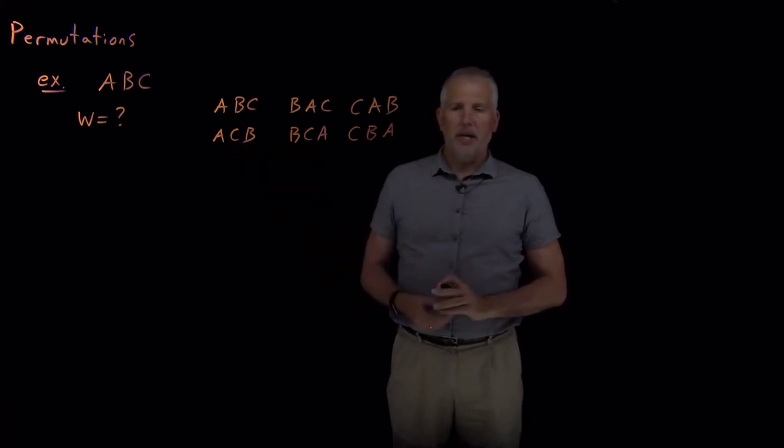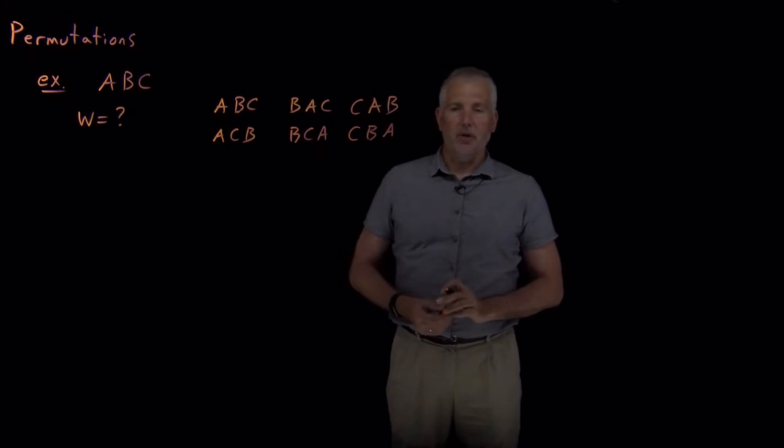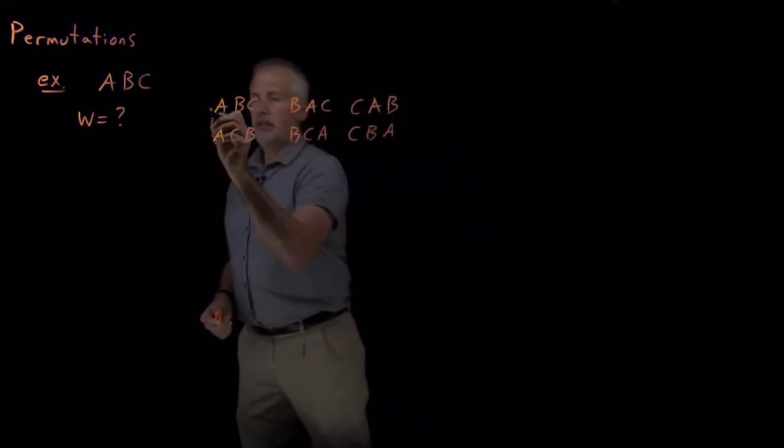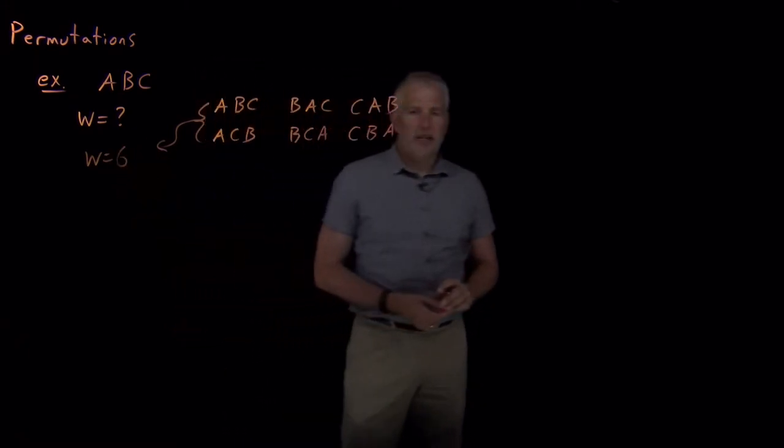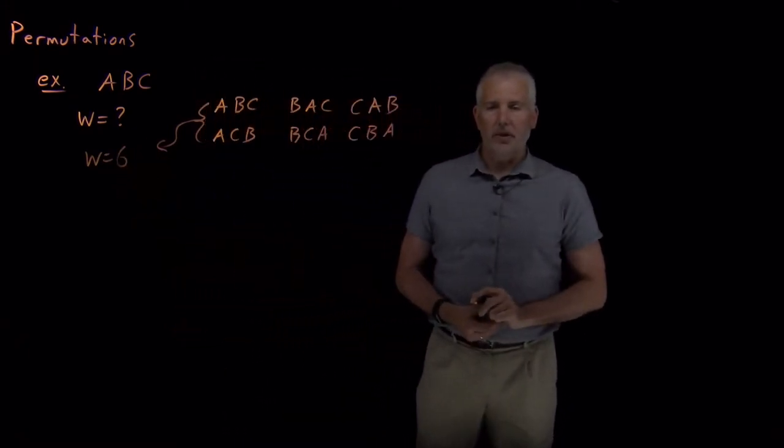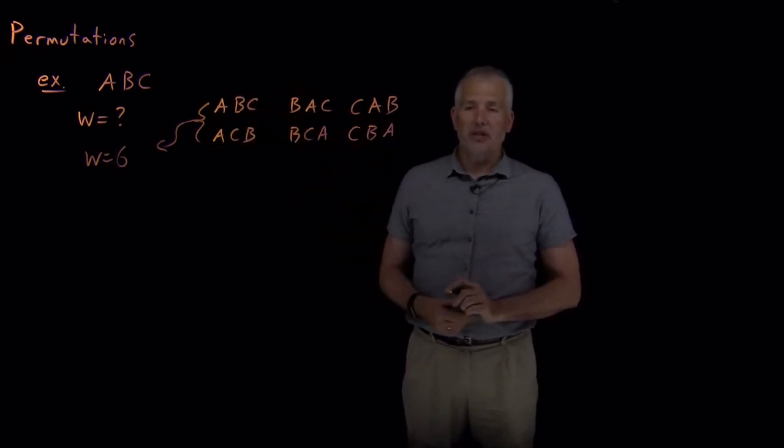No matter how hard I think about it, I'm not going to be able to come up with any other way of writing these three letters in any different order. There's only six different ways of combining those letters in different orderings. So we say that there's six different permutations of these three letters, A, B, and C.